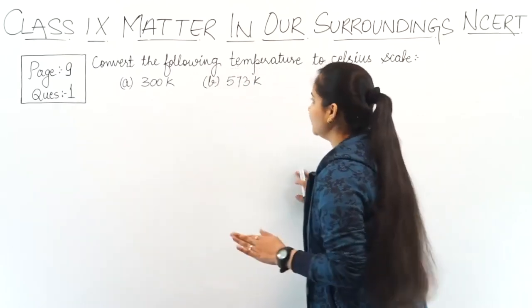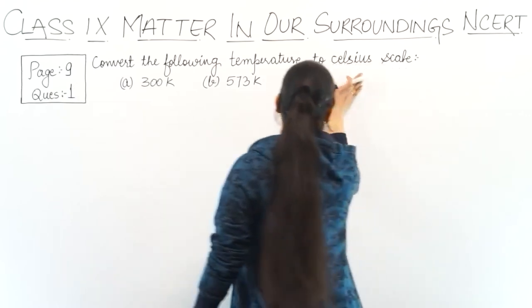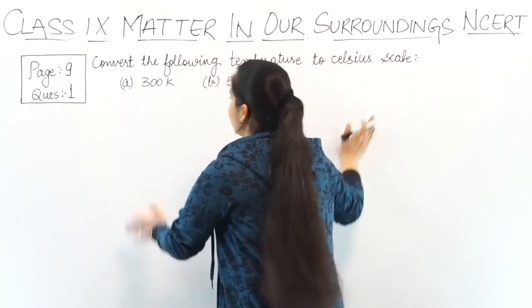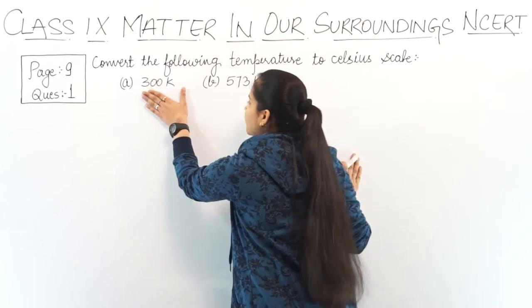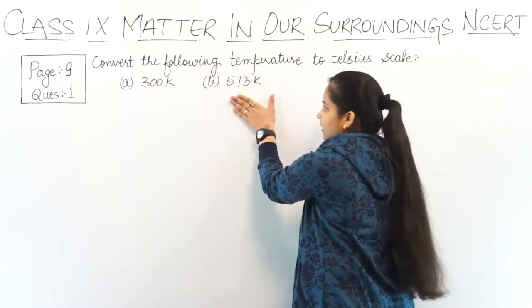The question is: convert the following temperatures to Celsius scale. We have 300 Kelvin and 573 Kelvin.